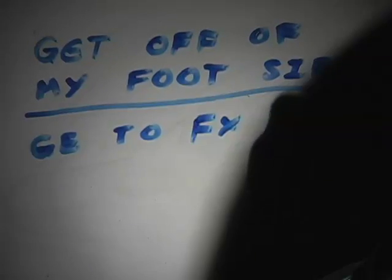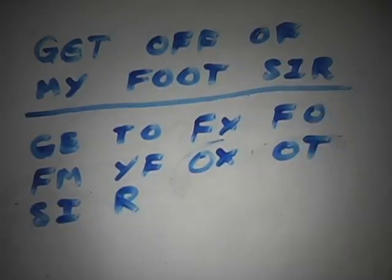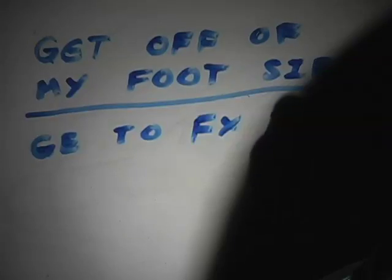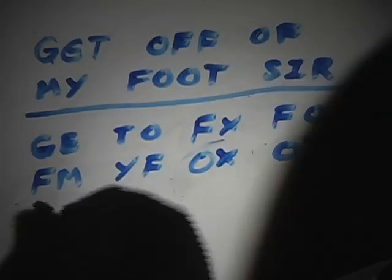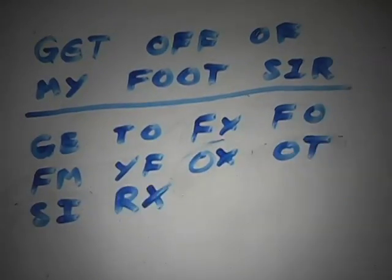Break the double O — G E T O F X F O F M Y F O X O T S I R. Also, if there are an odd number of letters, place an X at the end — G E T O F X F O F M Y F O X O T S I R X.